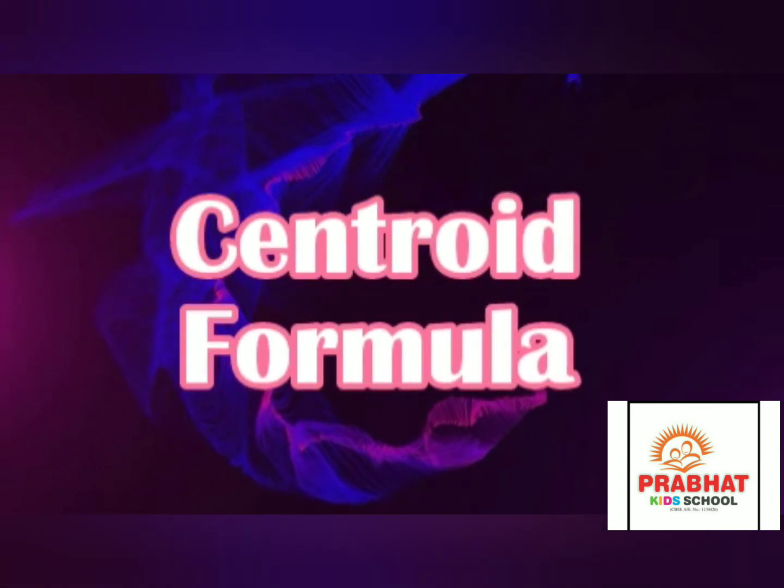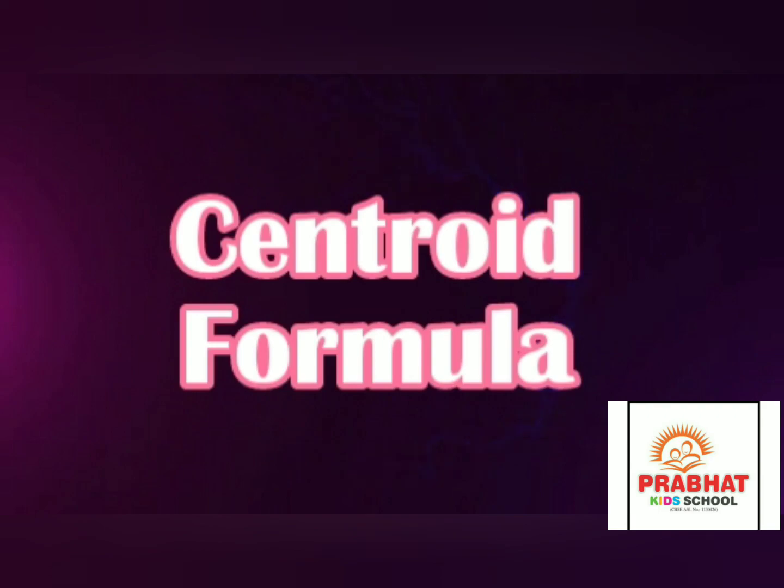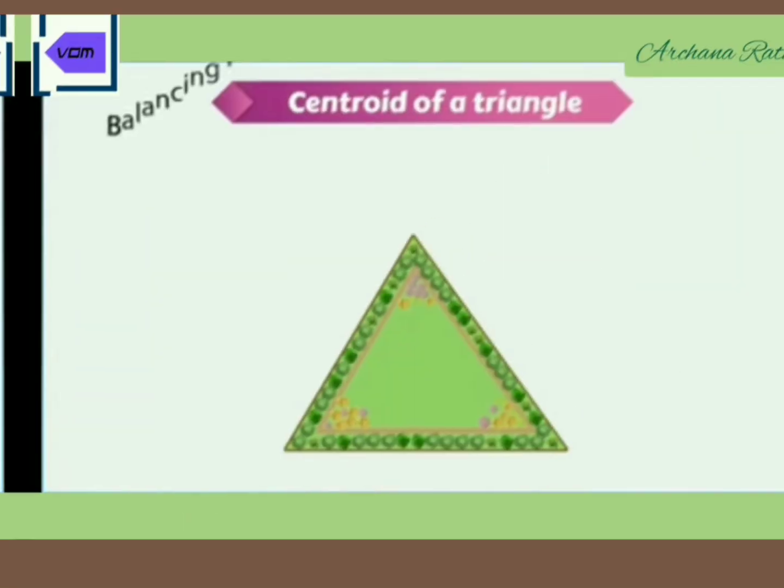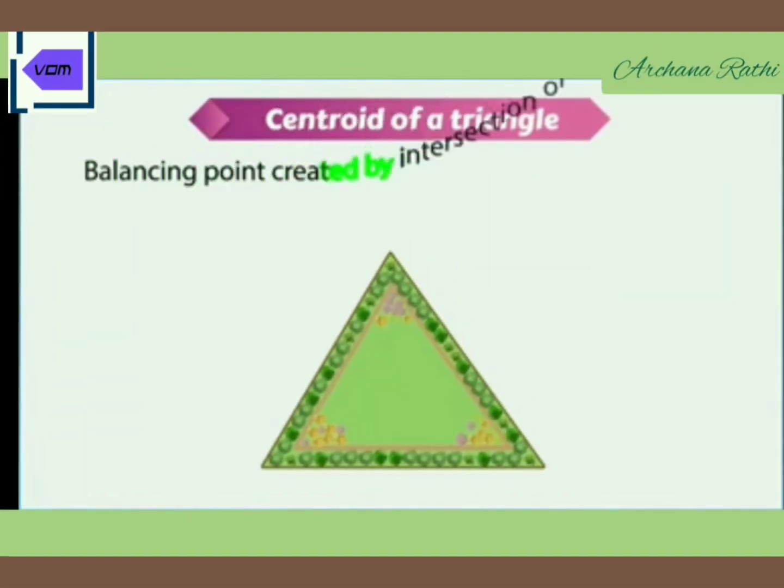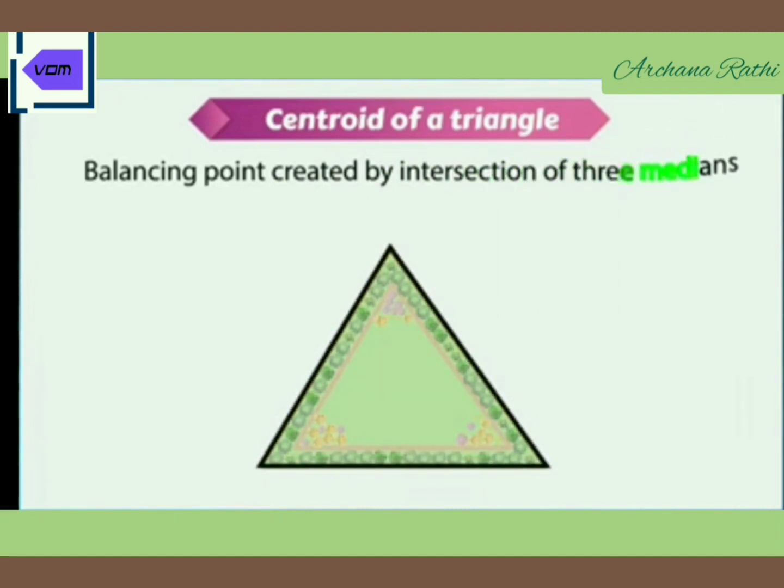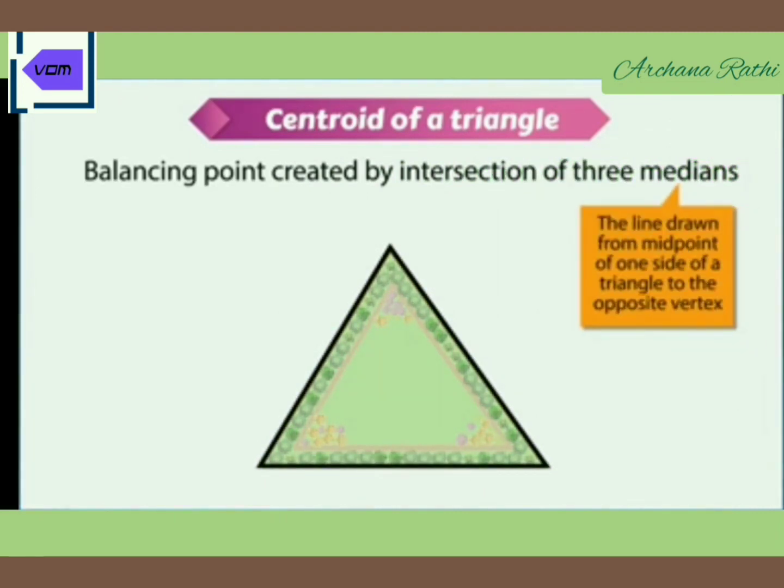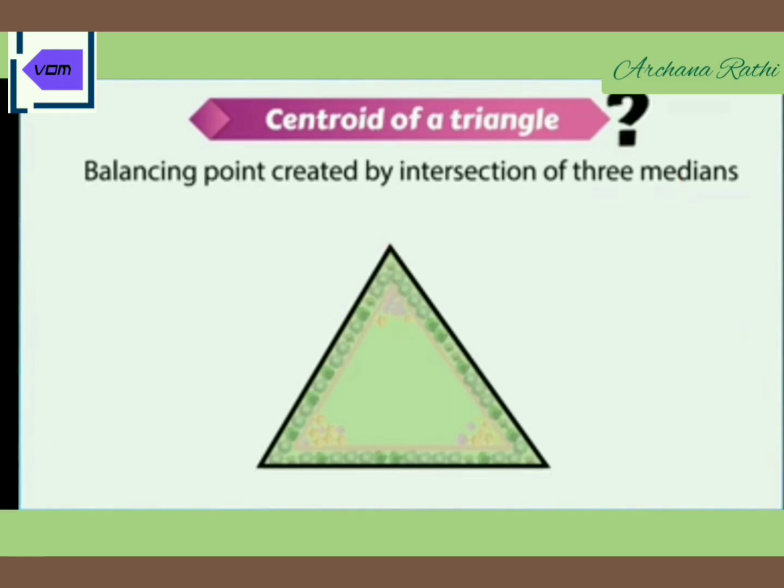In this video we are going to derive the formula called the centroid formula. The centroid of a triangle is the balancing point created by the intersection of three medians. A median is the line drawn from the midpoint of one side of a triangle to the opposite vertex.